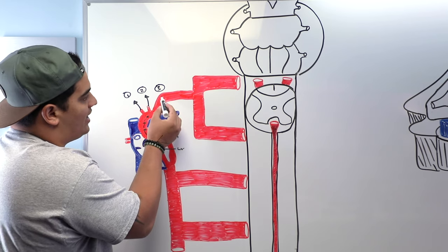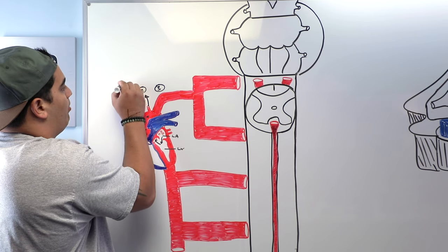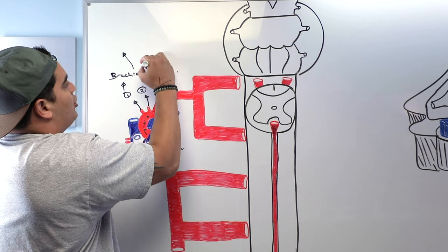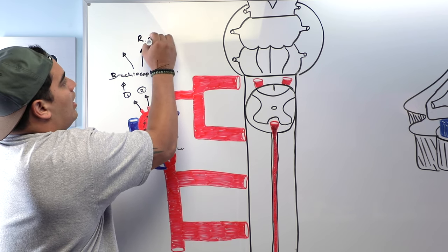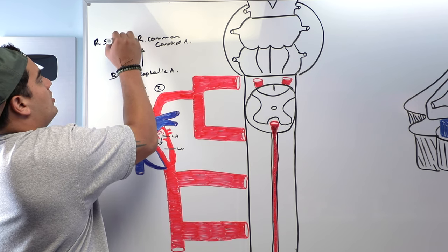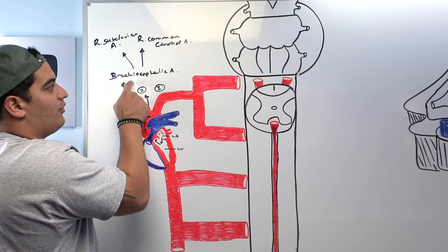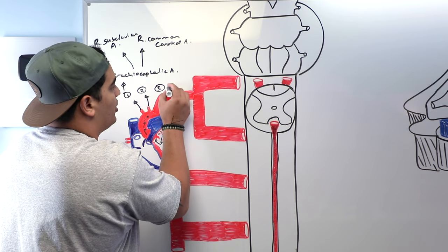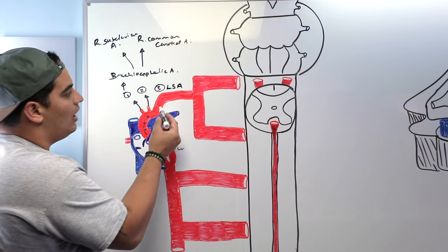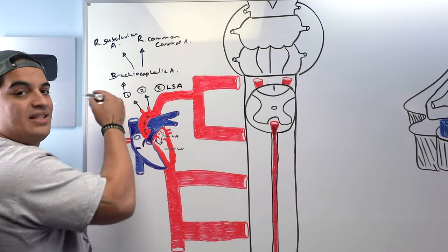The left subclavian comes directly off the aortic arch. The brachiocephalic artery branches into two vessels: the right common carotid artery and the right subclavian artery. So there are two subclavian vessels — the right subclavian coming off the brachiocephalic artery, and the left subclavian coming off the aortic arch. Everything we show on the left subclavian artery is going to be the same on the right subclavian artery.